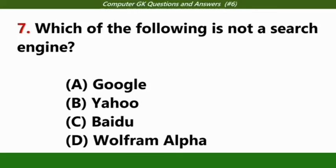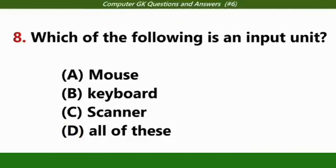Which of the following is not a search engine? Answer D, Wolfram Alpha. Which of the following is an input unit? Answer D, all of these: mouse, keyboard, scanner.